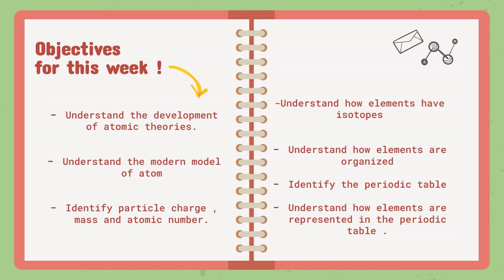We are also going to identify the particle charge, mass, and atomic number. We know that there are sub-particles of the atom: protons, neutrons, and electrons. We will get introduced to their charges, since each one has a different charge and mass. We will also understand that each element has a specific atomic number. The last objective of this lesson is understanding how elements have isotopes — what is an isotope, and how do we know that an element has isotopes.